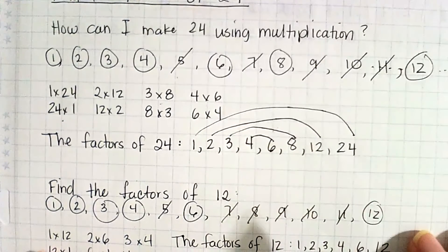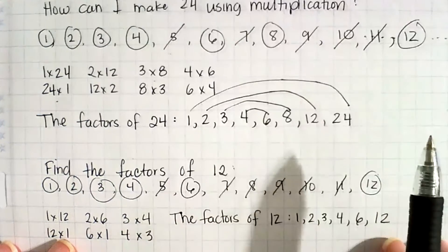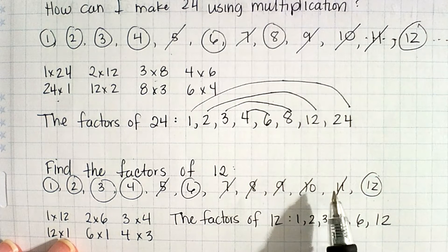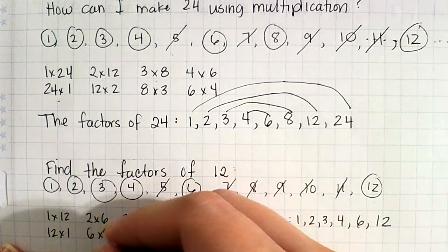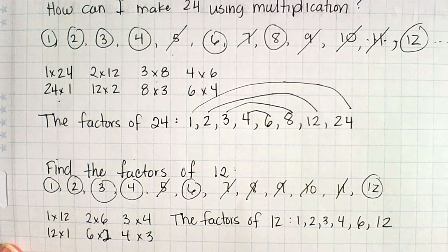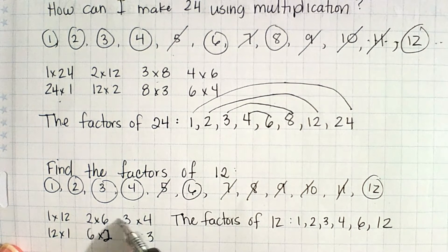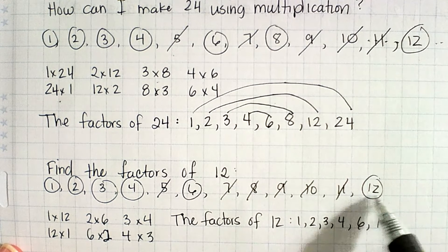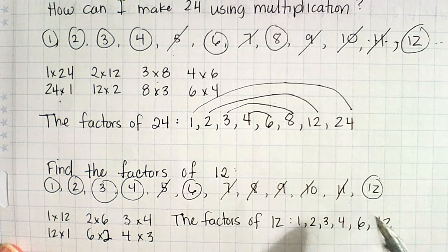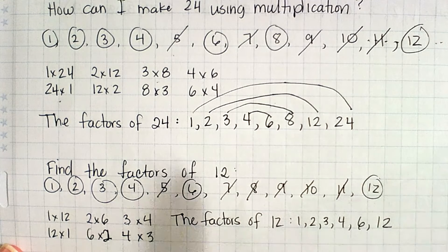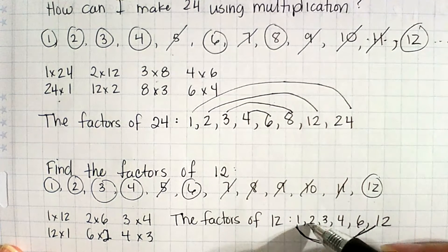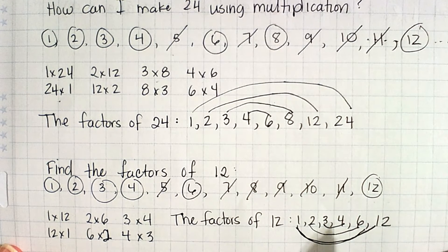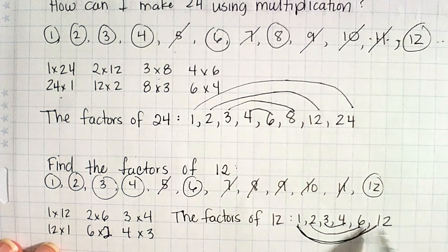Let's find the factors of 12. You can list all numbers up to 12, and as soon as factors start repeating you know you've found them all. 1 times 12 or 12 times 1. Since 12 is an even number, 2 times 6 or 6 times 2. I can use 3: 3 times 4 or 4 times 3. I can't use 5, then I get to 6 which I already used. I can't use 7, 8, 9, 10, or 11. My factor pairs are 1 and 12, 2 and 6, and 3 and 4. So the factors of 12 are 1, 2, 3, 4, 6, and 12.